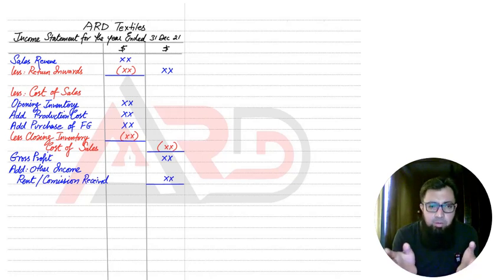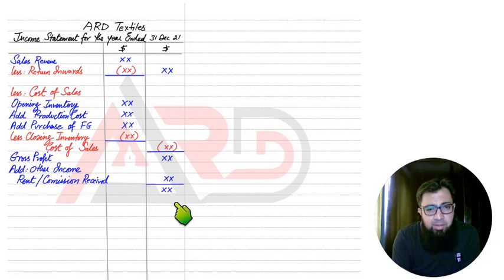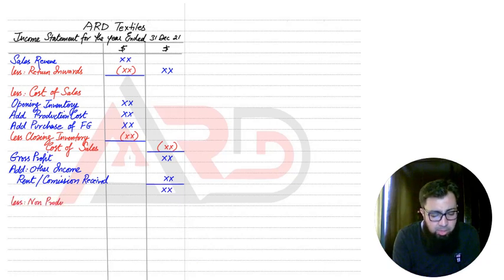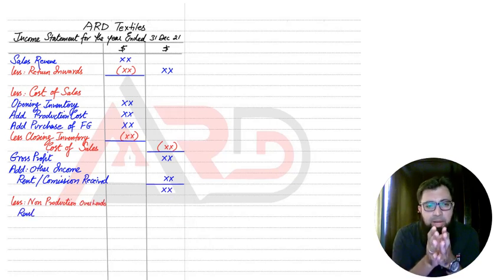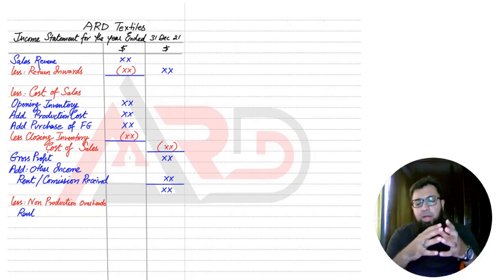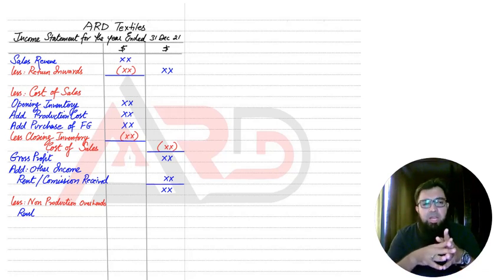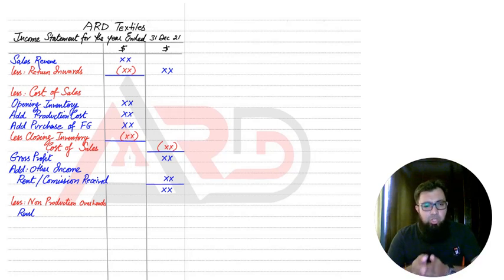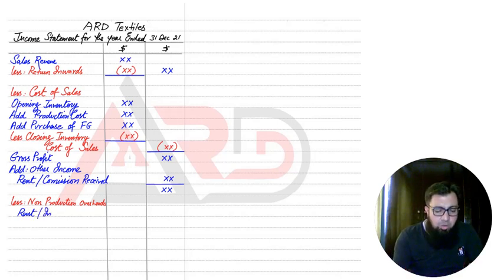Gross profit plus other income gives a no-name subtotal value. Then we have expenses, but instead of writing 'expenses,' we write non-production overheads, or non-factory or non-manufacturing overheads. Any cost that is other than production, other than manufacturing, other than factory comes here in the non-production cost category. For example, if we have already charged 75% of rent and insurance belonging to the factory, the remaining 25% would be charged here in the income statement.